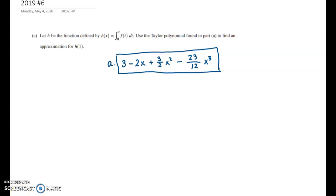Again, Part C uses the Part A information, so if you made a mistake on Part A, you still qualify for full credit on Part C. And Part C is saying, I want to figure out the approximation for H of 1.